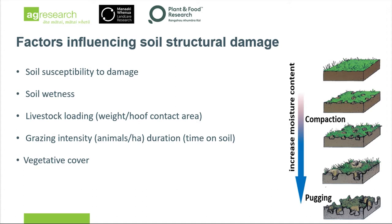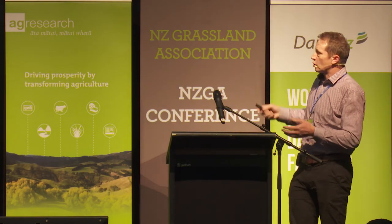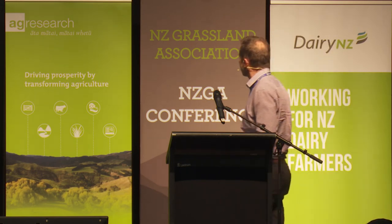Soil wetness is an absolute key factor. Soil moisture content regulates so much of the compaction risk. When it's dry, you virtually don't have any compaction risk because you can't squash a soil if it's holding strong — the structure itself is holding the weight. As you get it a little bit wet, you lubricate the soil more, enabling pressure to squash some of the air out. When it's at field capacity — full of water but not saturated — that's when you get the most compaction, squashing out those large air spaces with the pressure of a hoof. When saturated, you can't compact a soil that has no air in it because all those voids are full of water. Instead, you're just moving it around like soup or jelly — that's when you see pugging instead.